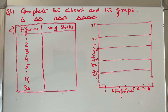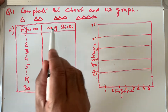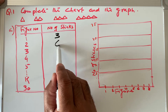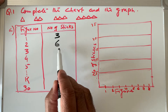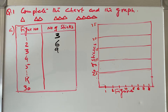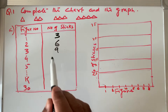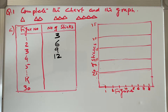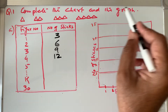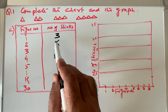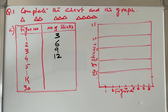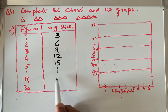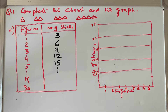Figure number one has three sticks. Figure number two has six sticks. Figure number three has nine sticks. Figure number four has twelve, and so on. Figure number five would be fifteen — we don't draw it but we know it's going up by three: three plus three is six, six plus three is nine, nine plus three is twelve, twelve plus three is fifteen.